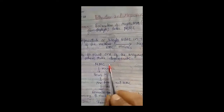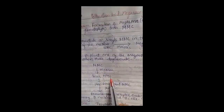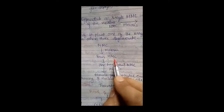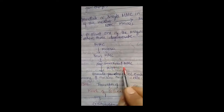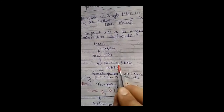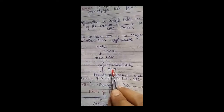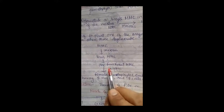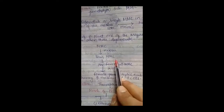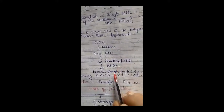Out of these 4 megaspores, 1 acts as a functional megaspore and the other 3 degenerate. This type of development of megaspores is known as monospermic development — monospermic because a single megaspore is functional and the other 3 degenerate.